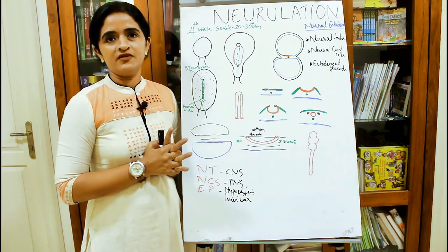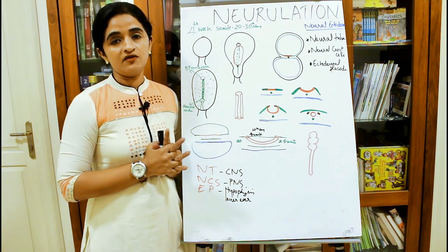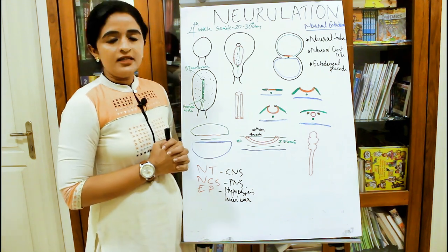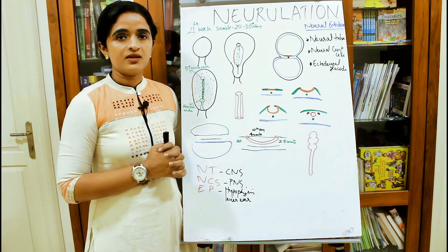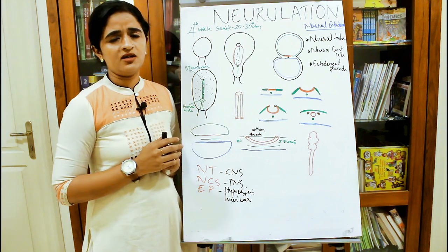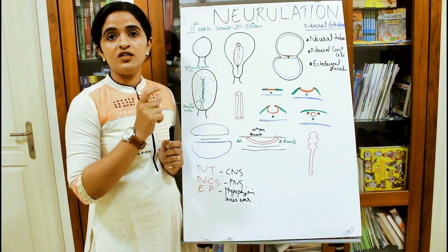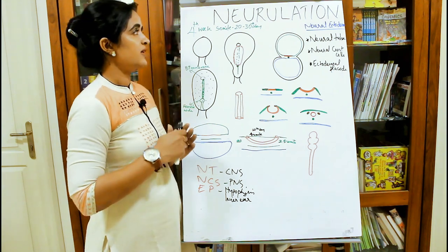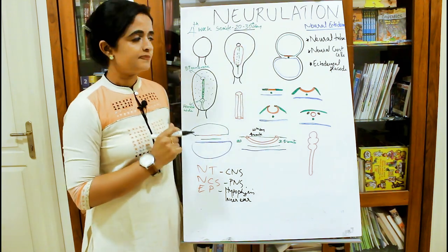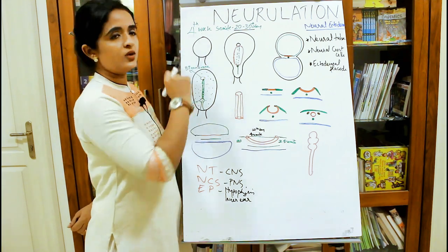The development of the nervous system begins in the fourth week of the intrauterine period. This is also the period of somite development — the somite period is between the 20th and 30th day. Now let's look at the embryonic disc.